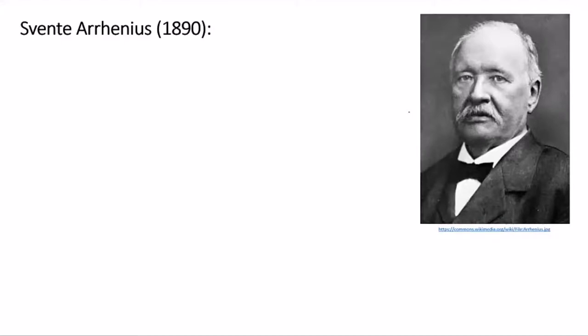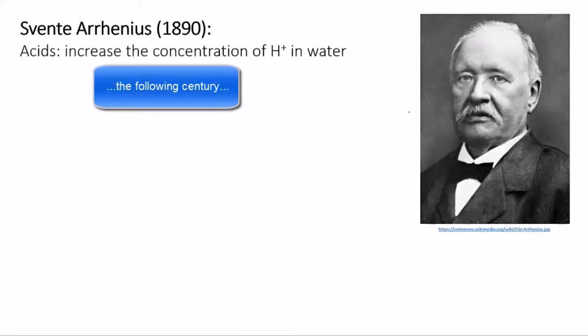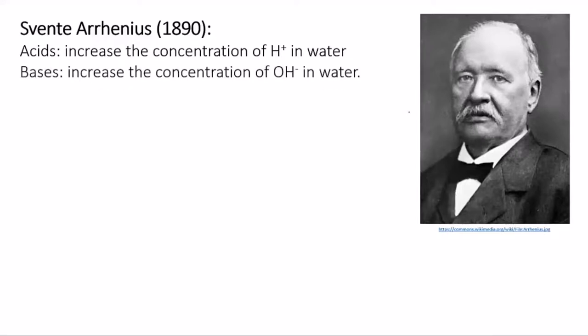The first generally accepted definition for acids and bases came from Svente Arrhenius, a Swedish chemist. In 1890, he defined an acid as a substance delivering hydrogen cations to the solution, and a base as a substance that delivered hydroxide anions to the solution. This is the same as saying that when you dissolve an acid in water, it increases the concentration of hydrogen ions in the water, whereas if you dissolve a base in water, it'll increase the concentration of hydroxide ions.